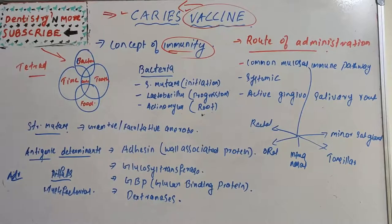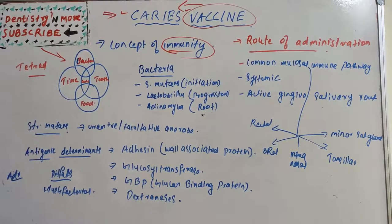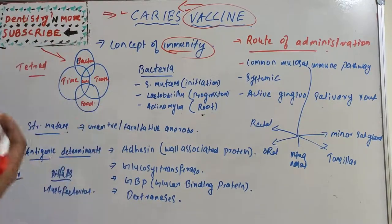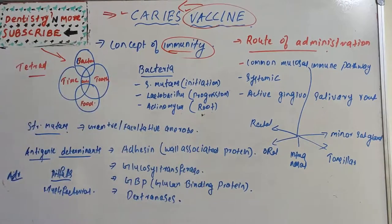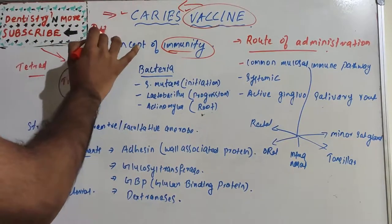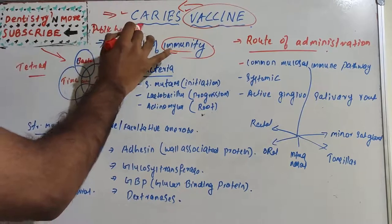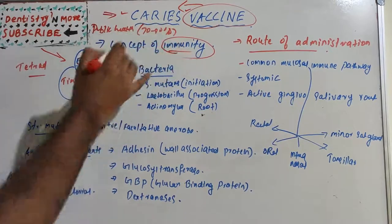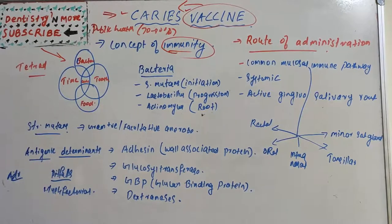Why do we need a caries vaccine? Dental caries is a major public health problem with a severe impact on oral health-related quality of life. It can affect personal life, create loss of working hours, and cause people to skip school or work. Almost 70 to 80 percent of the population will have at least one dental caries in their mouth, making vaccination very much required.